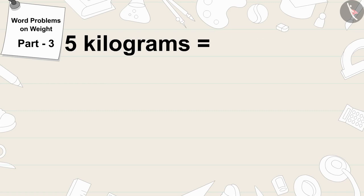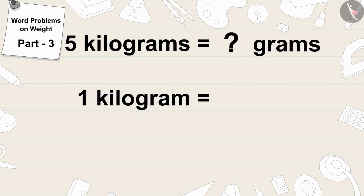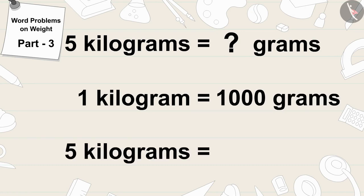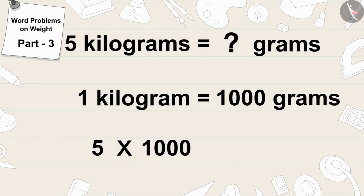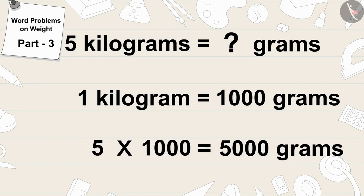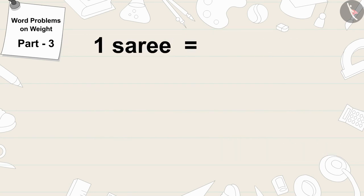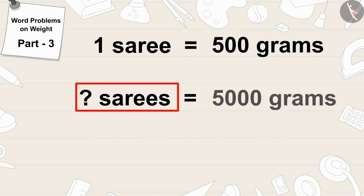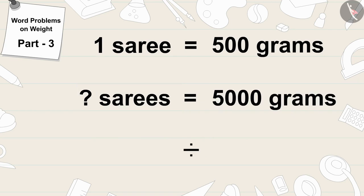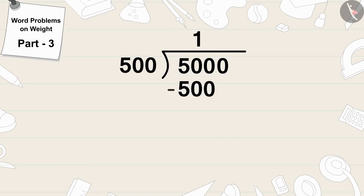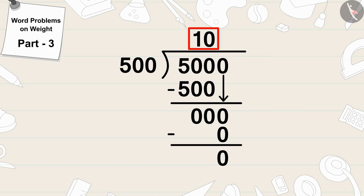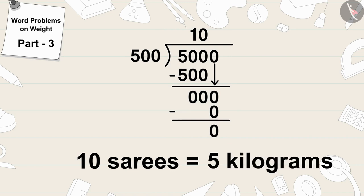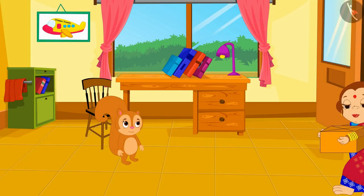First we will write 5 kilograms in grams. One kilogram is equal to one thousand grams, so five kilograms — five times one thousand — will be equal to five thousand grams. Now Banno has a sari of five hundred grams. To find out how many saris will be in five thousand grams, we will divide five thousand by five hundred. Five thousand divided by five hundred is ten.